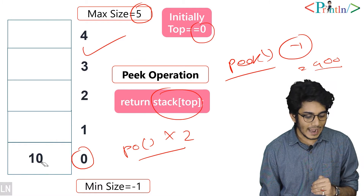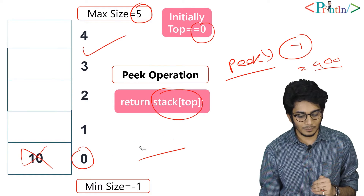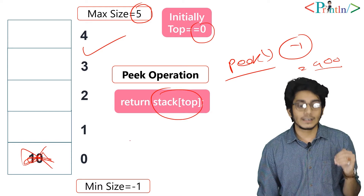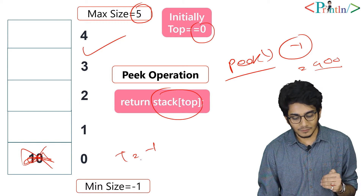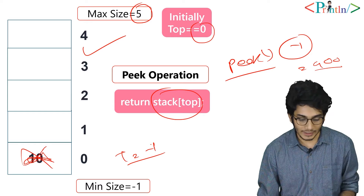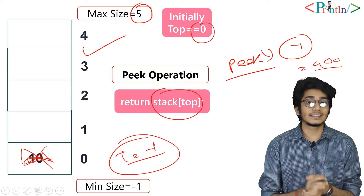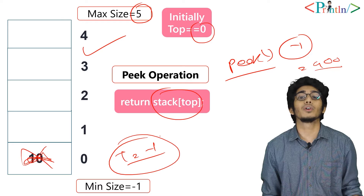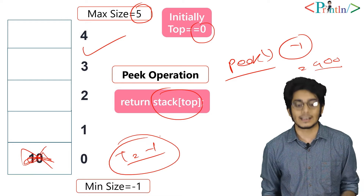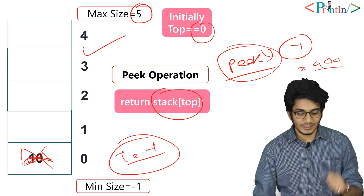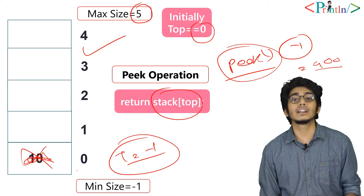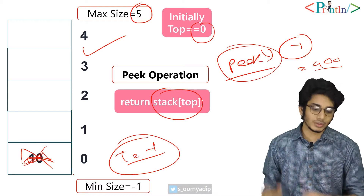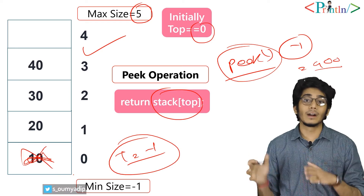For the pick function, we have to check one condition: underflow. If our stack is not in underflow, we send whatever value is at the top. Now let's say we call pop one more time and remove the value 10. So now the value of top is minus 1 — our stack doesn't contain anything.